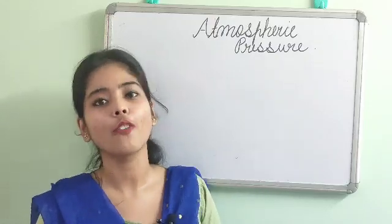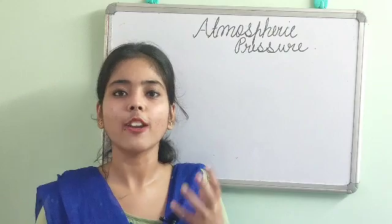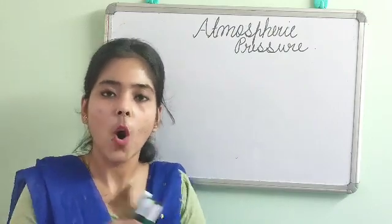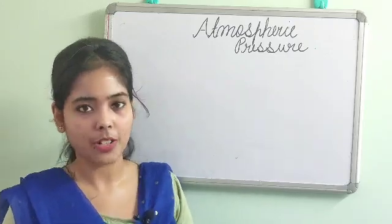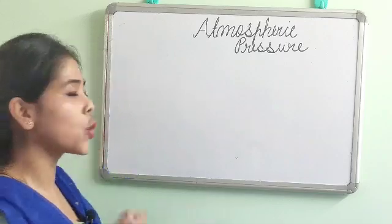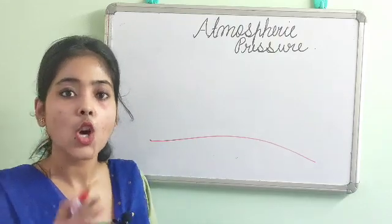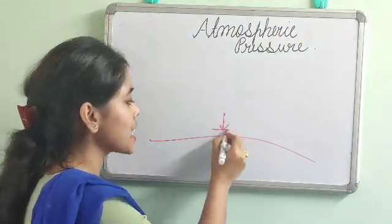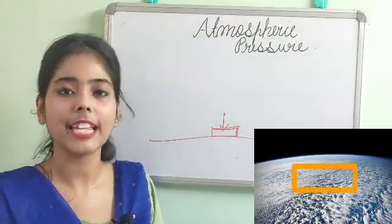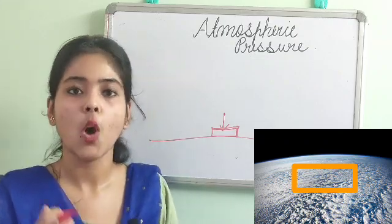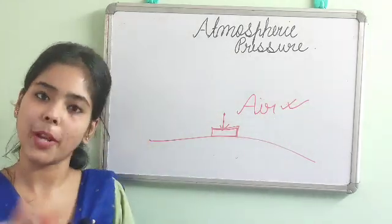Now, what is pressure? Pressure means when an object exerts its weight on a particular area of a particular place, that is known as pressure. Similarly, what is atmospheric pressure? On the surface of the earth, when the air gives its weight on a particular amount of area of our earth's surface, then it will be known as atmospheric pressure — atmospheric because the main agent is air, and air is only giving the pressure.